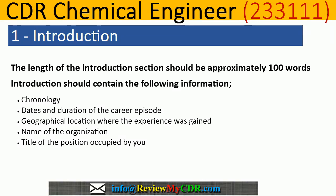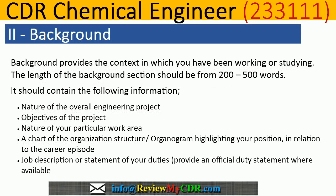The Introduction should contain: chronology (dates and duration of the career episode), geographical location where the experience was gained, name of the organization, and title of the position occupied by you. The second section is Background, which provides the context in which you have been working or studying. Its length should be 200–500 words, and it should contain: nature of the overall engineering project, objectives of the project, nature of your particular work area, an organizational chart highlighting your position, job description or statement of duties, and an official duty statement where available.